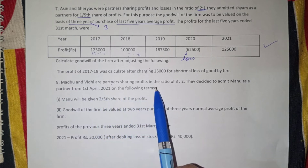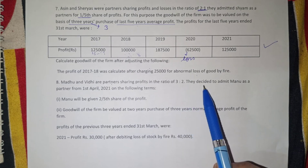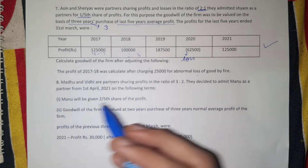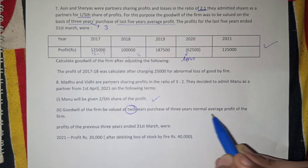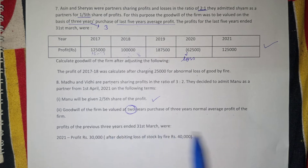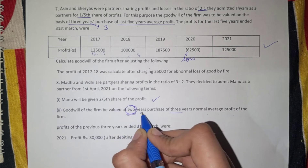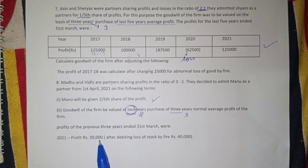Question 8: Madhu and Vidhi are partners sharing profits in the ratio of 3:2. They decided to admit a new partner on 1st April 2021. Goodwill will be valued at 2-year purchase of 3-year normal average profit of the firm. We have been given profits for the past 3 years with adjustments needed.